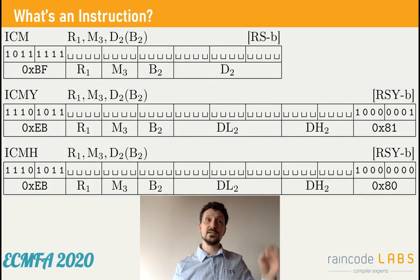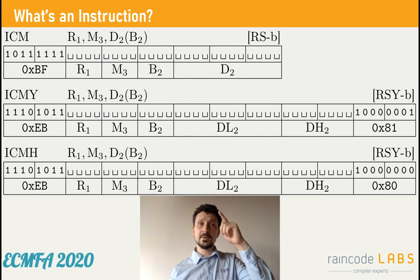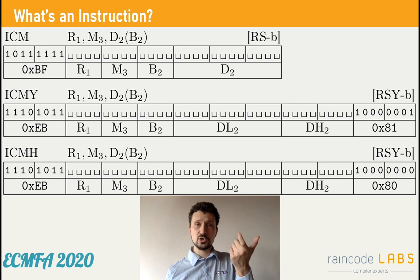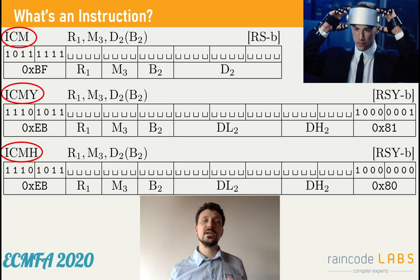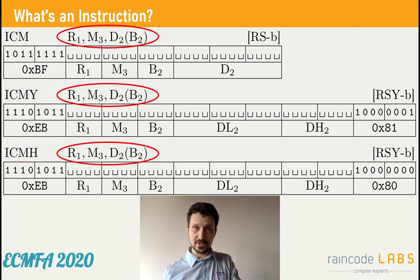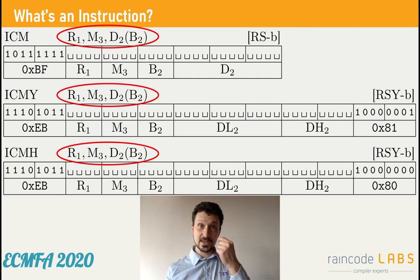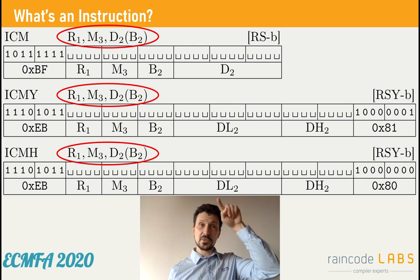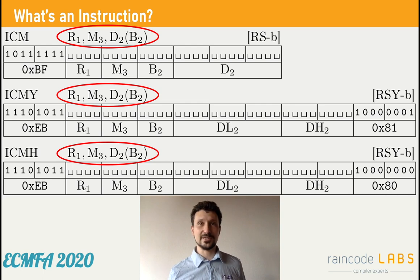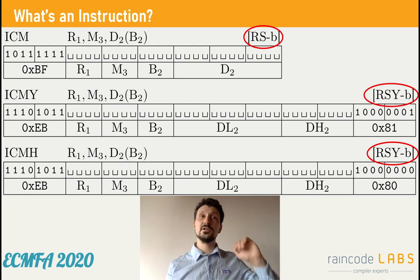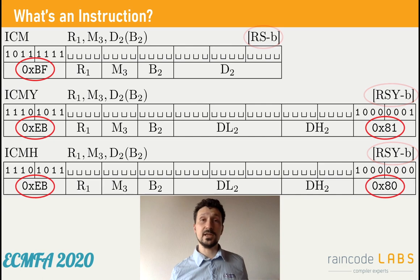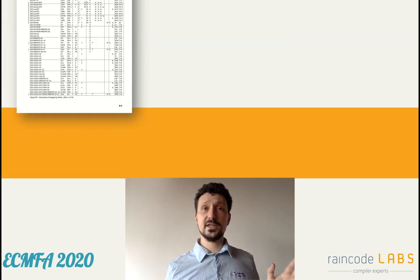Instructions are defined approximately like this. ICM, ICMY, ICMH are short versions of 'Insert Character Under Mask', which is the real name of an instruction — they are mnemonics. Then you have arguments, which have a different order in how the programmer writes them, in how they are laid out in memory, or in how they are called conceptually. Then you have the format, which lets you know that the second and third variants of ICM look very similar to each other but very dissimilar to the first. And then you have some constants that will let you generate some code.